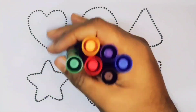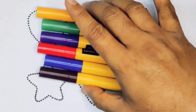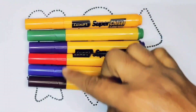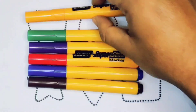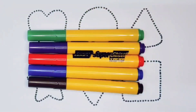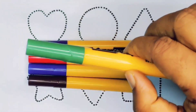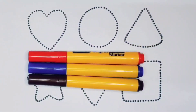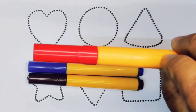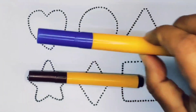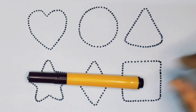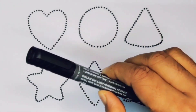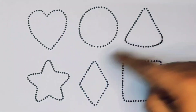Hello kids, welcome to my new video. First we're going to know the color names: orange color, green color, purple color, red color, blue color, chocolate color, and black color.